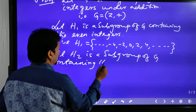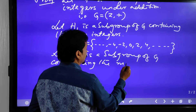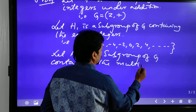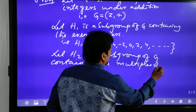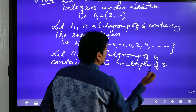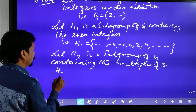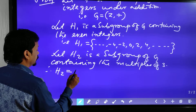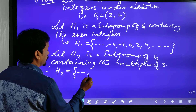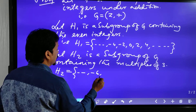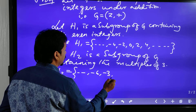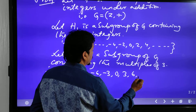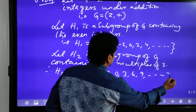Again, let H2 be a subgroup of G containing the multiples of 3. That means H2 = { ..., -6, -3, 0, 3, 6, 9, ... }.